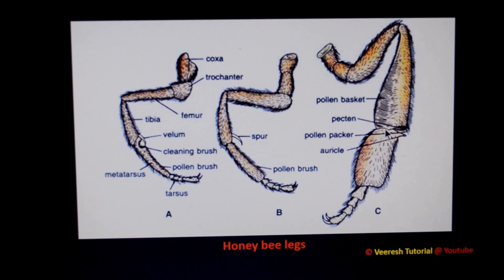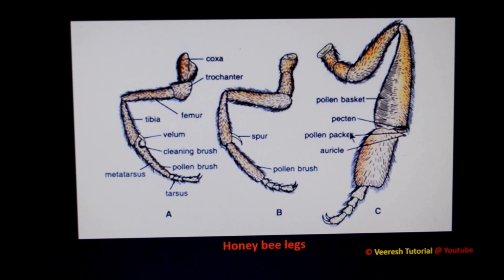The hind leg contains the tibia, whose outer surface has a shallow cavity with long hairs at its edges, serving as a pollen basket — also called the corbiculum. A pollen packer, also called the pollen brush, consists of two structures: the pecten at the distal end of the tibia, and the auricle at the proximal end of the basitarsus, which is fringed with small hairs. These two structures are useful to load pollens into the pollen basket.